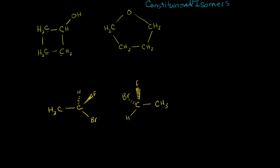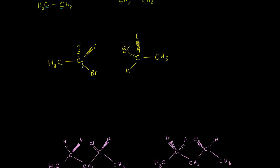Now let's look at this next molecule. This carbon looks chiral — it is an asymmetric carbon. It is bonded to four different groups: fluorine, bromine, hydrogen, and then a methyl group. And so is the one on the right. They're both made up of the same things. Not only are they made up of the same things, but the bonding is the same: carbon to fluorine, carbon to bromine, carbon to hydrogen, and carbon to the methyl group in both. But they don't look quite the same.